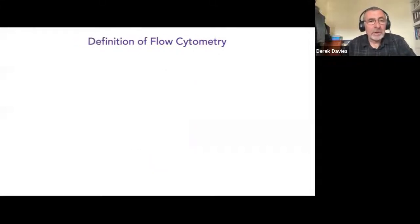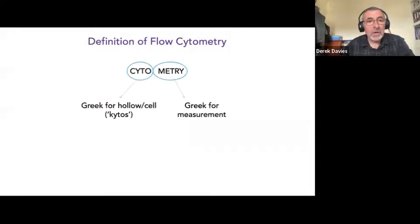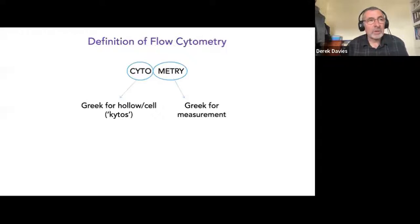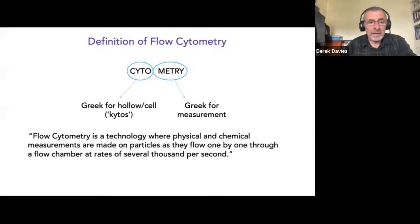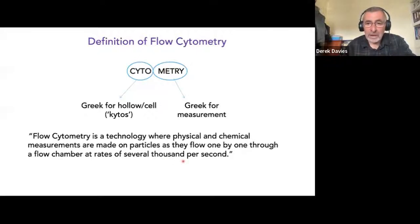Let's start by thinking about what the definition of flow cytometry is. Cytometry comes from two Greek roots: 'cyto' meaning cell and 'metry' meaning measurements. We make measurements all the time in the lab — if we look down a microscope we're looking at the size and shape of cells. A flow cytometer could really be considered to be a big microscope. Flow cytometry is very rapid compared to microscopy; we can look at several thousand cells per second — five or ten thousand cells per second.